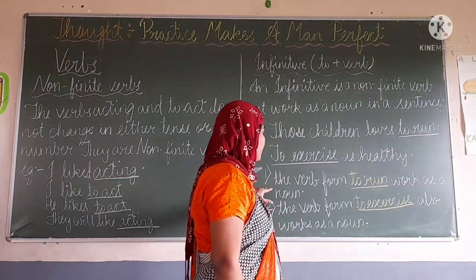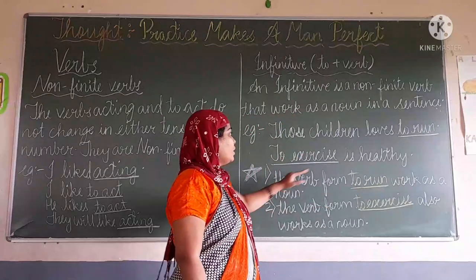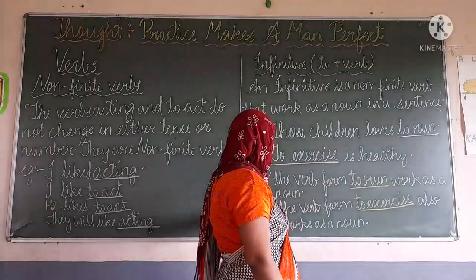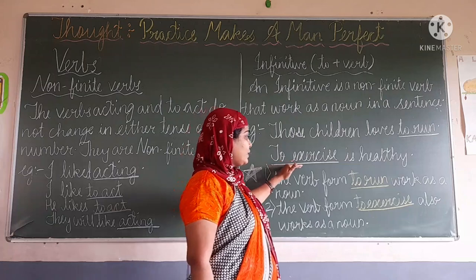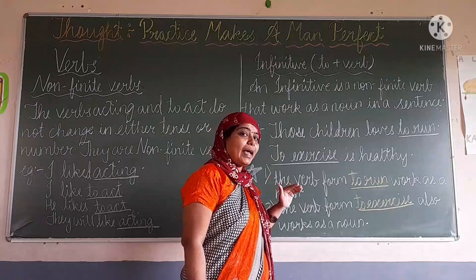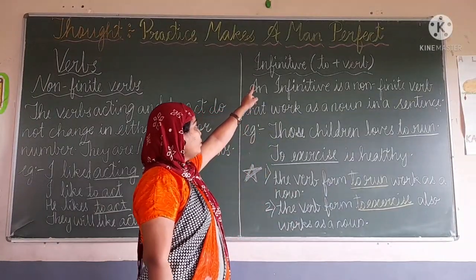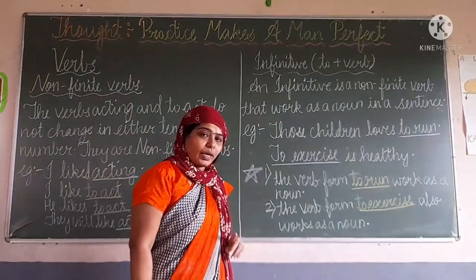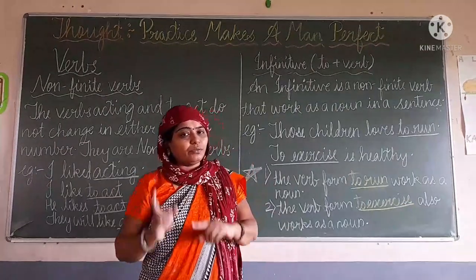Here, I have written 'to run' and 'to exercise' because they function as nouns in the sentences. 'To run' works as a noun. The verb form 'to exercise' also works as a noun. They are verb words, but they act as nouns. So in this way we have to find out the infinitive words — infinitive verbs — in which we have to add TO plus verb.